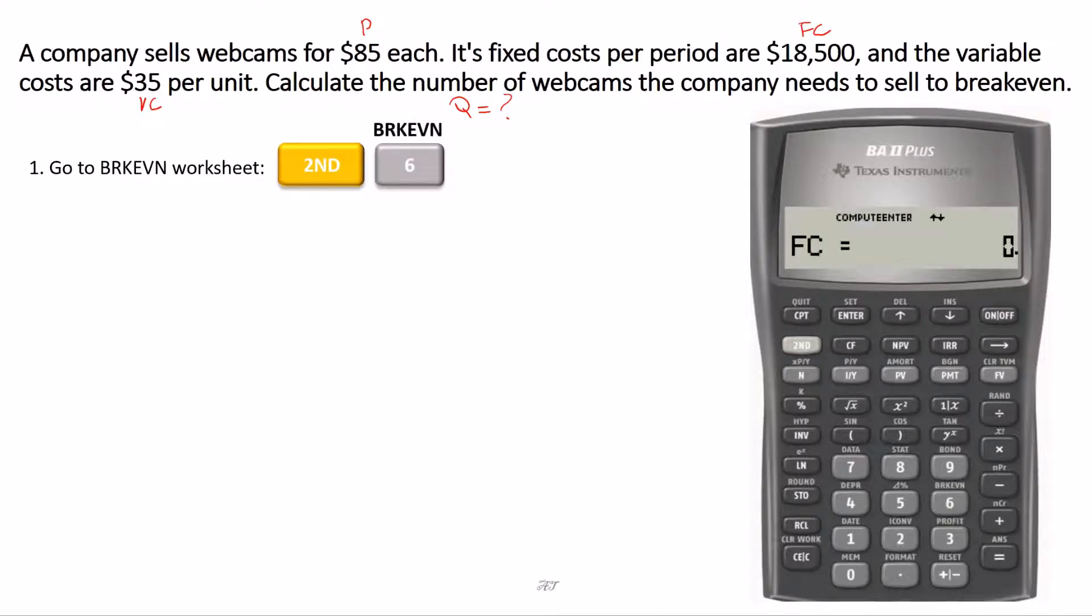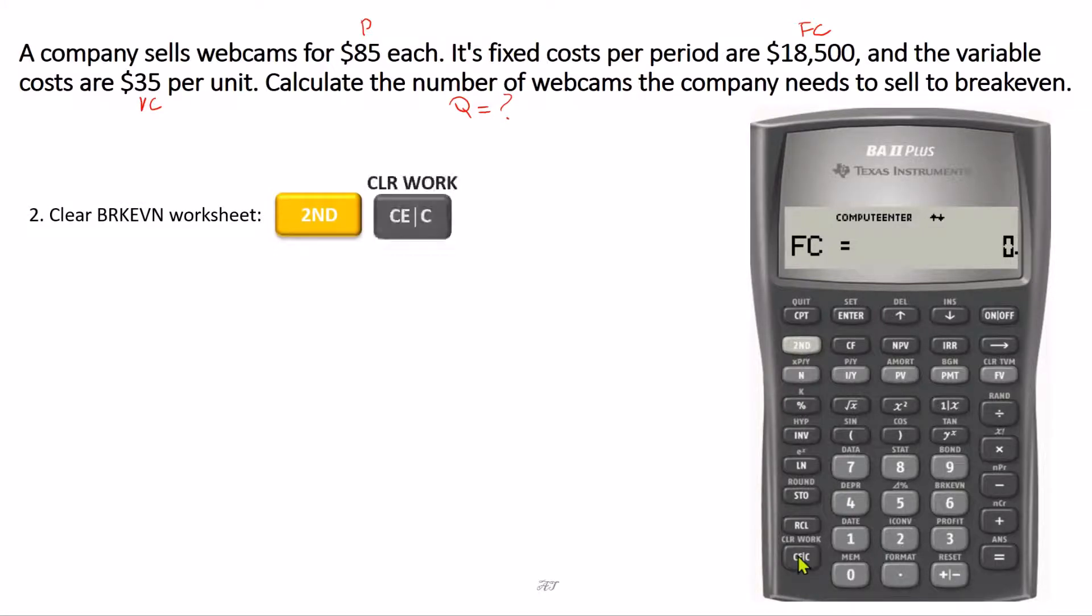Now we are in the sheet. Before we enter the values, we need to clear the sheet. Press second and then press clear here. Now all the variables are set to zero.